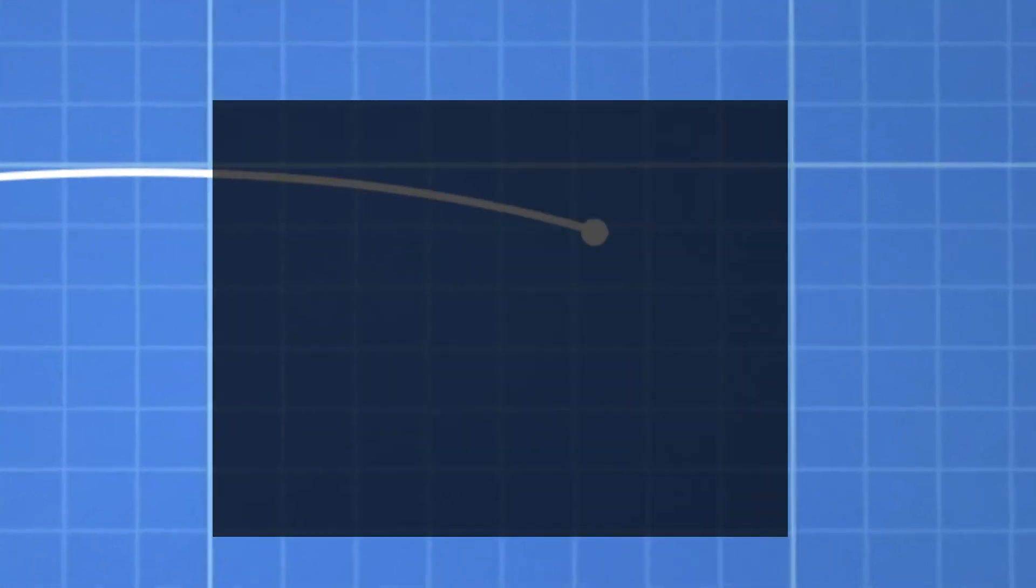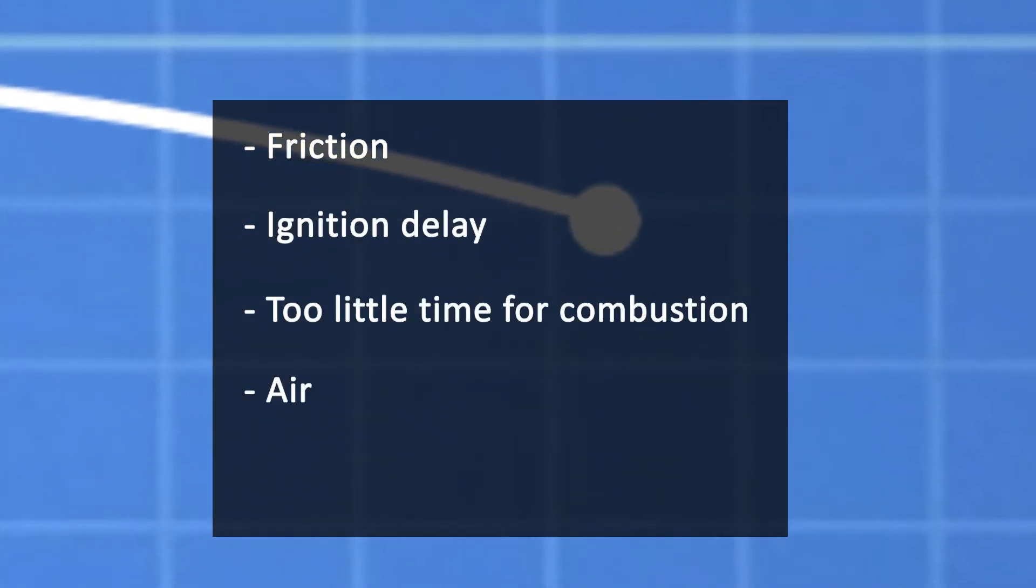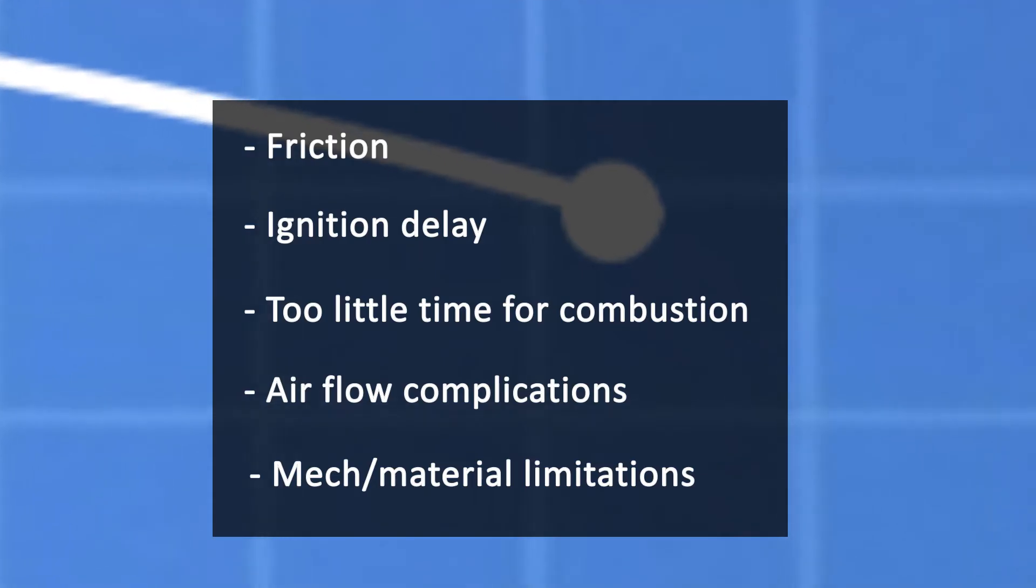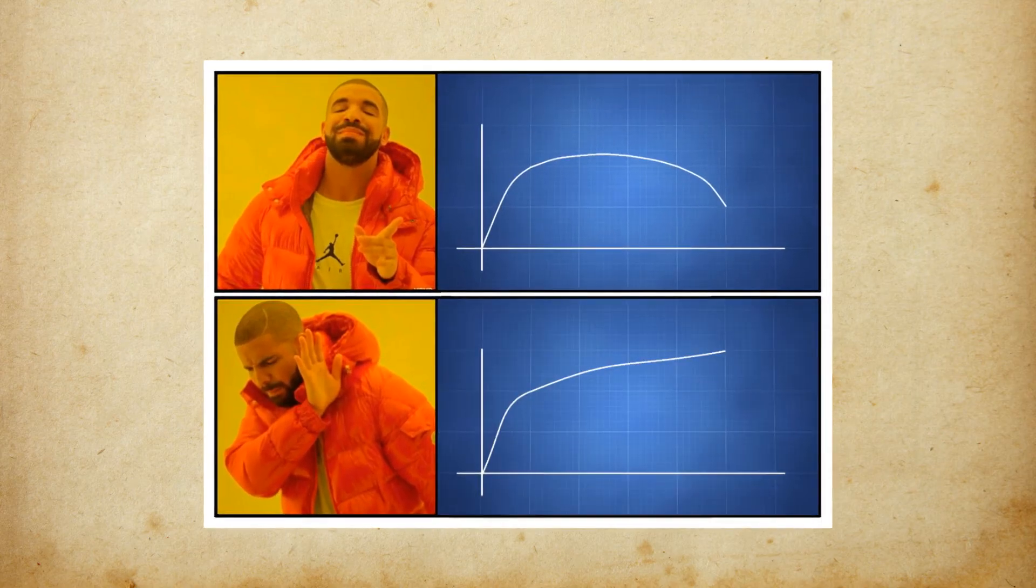That's because at higher revs, factors like friction, ignition delay, too little time for effective combustion, airflow complications and other mechanical and material limitations start affecting the engine. Basically, after a certain speed, you hit a limit. That's why torque curves look like this and not like this.